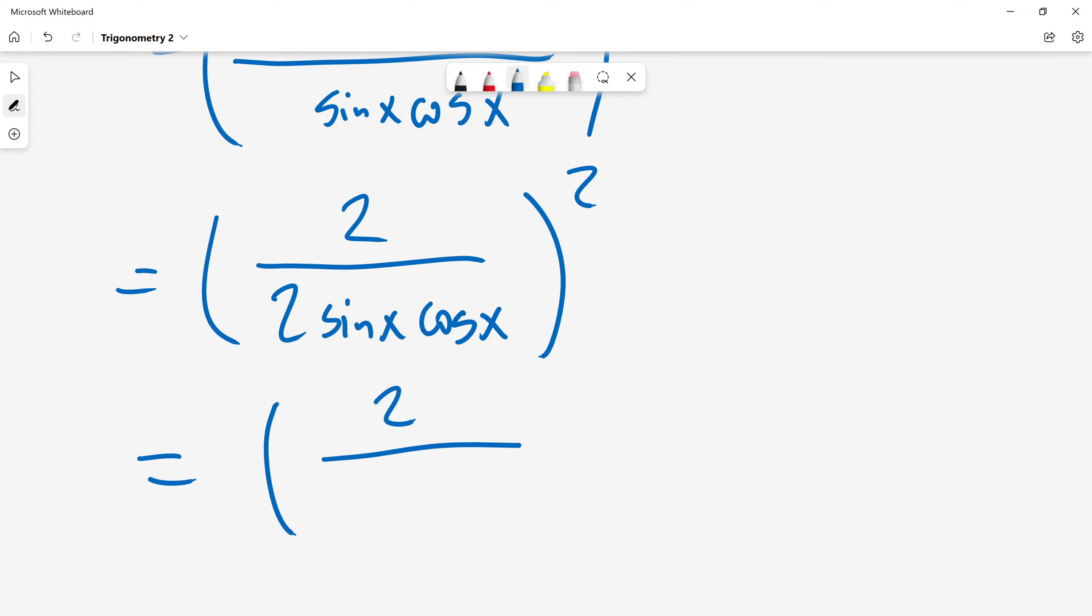Then in denominator two sin x cos x is the same as sin 2x. So this will be equal two squared in numerator. This is four. And in denominator I will have sin squared 2x.